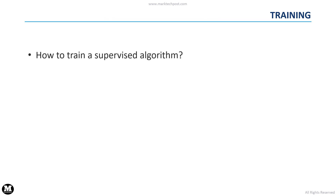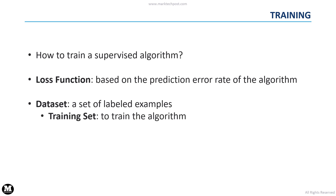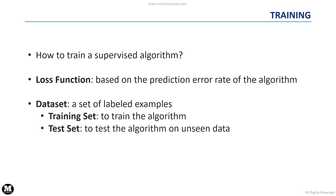Let's now consider a supervised algorithm. How can we train it? First of all, we have to consider a loss function that is based on the prediction error rate of the algorithm. We also use a dataset — in the case of supervised learning, we have a set of labeled examples. This dataset can be divided into a training set and a test set. The training set is used to train the algorithm, minimizing a specific loss function. The test set is then used to test the generalization capabilities of the algorithm on unseen data — that means data that were not used during the training process.